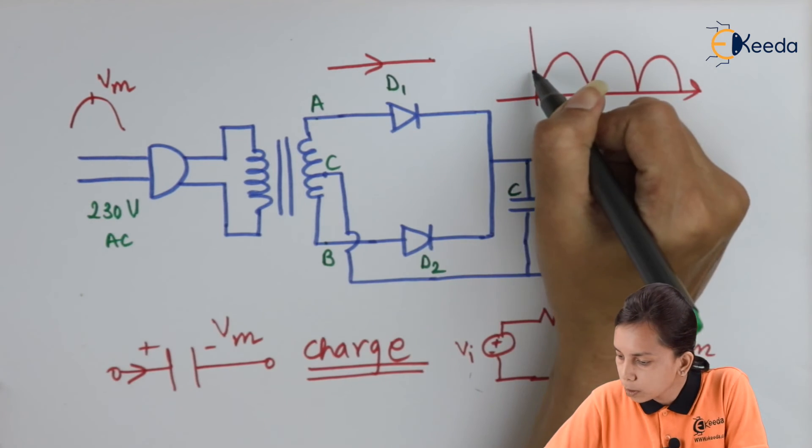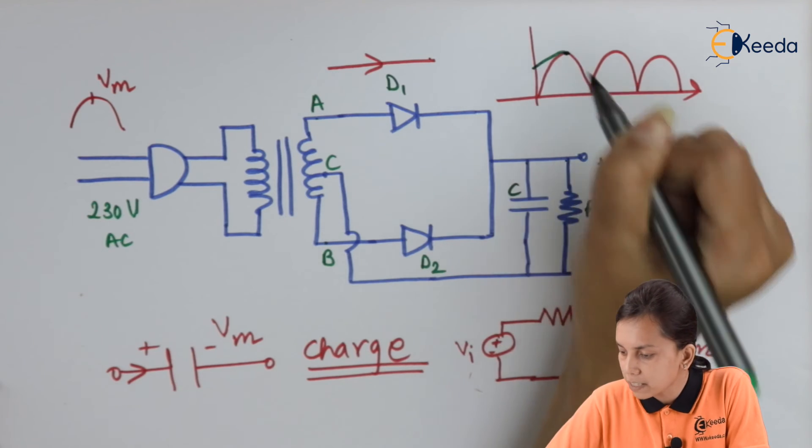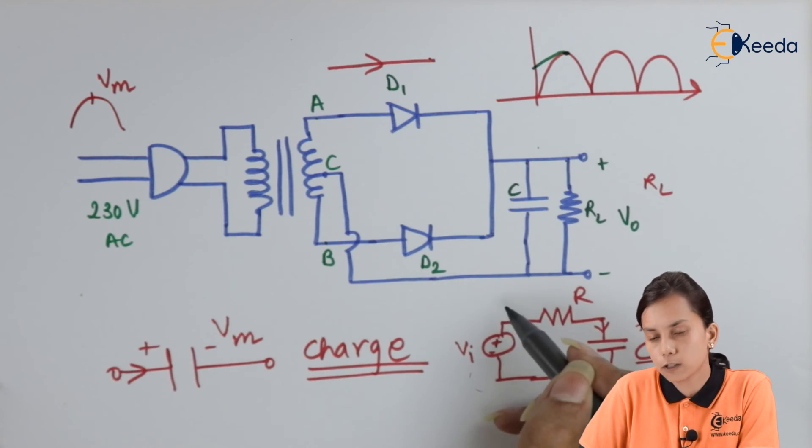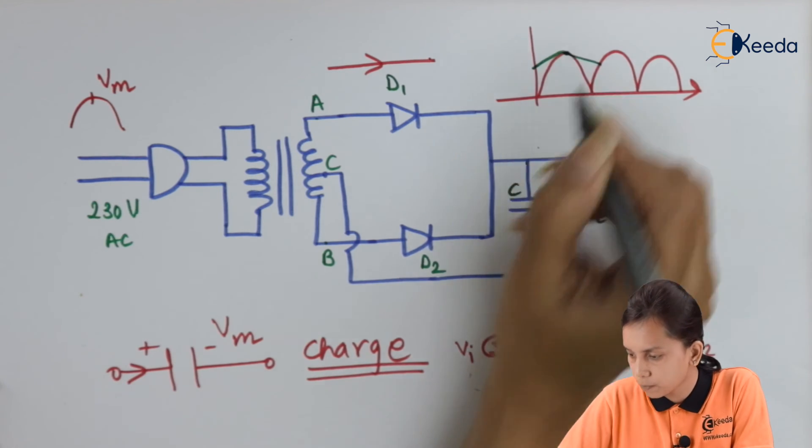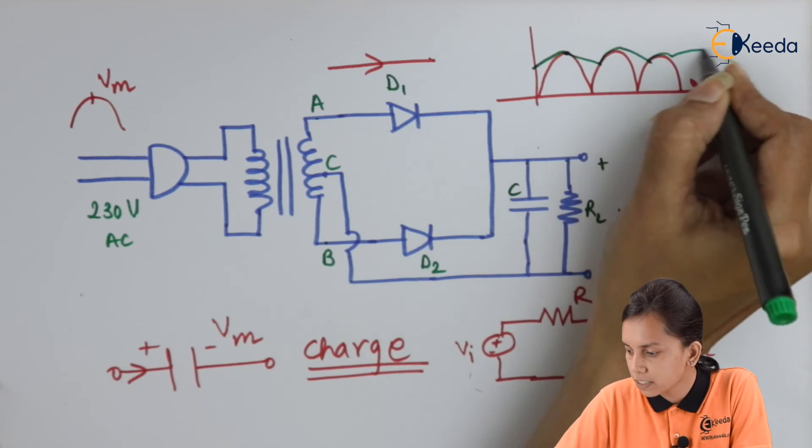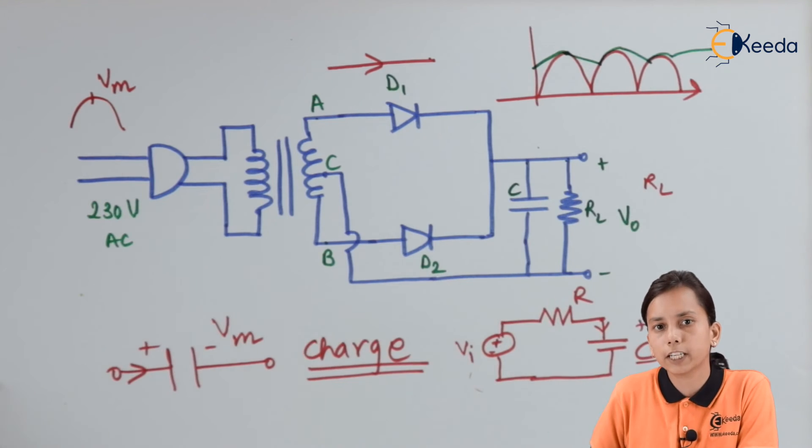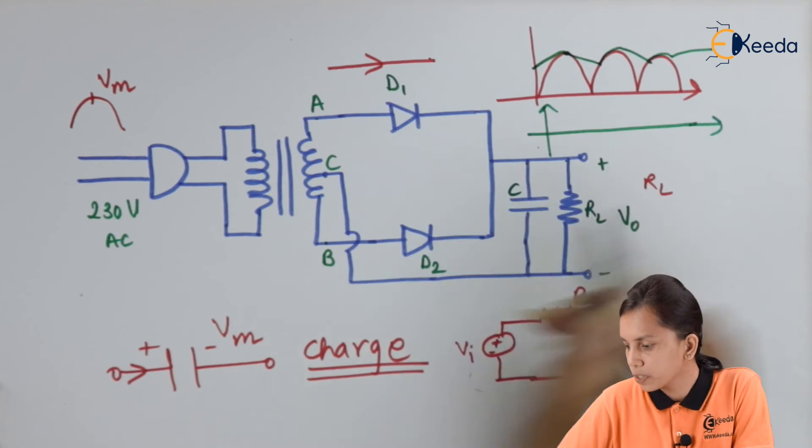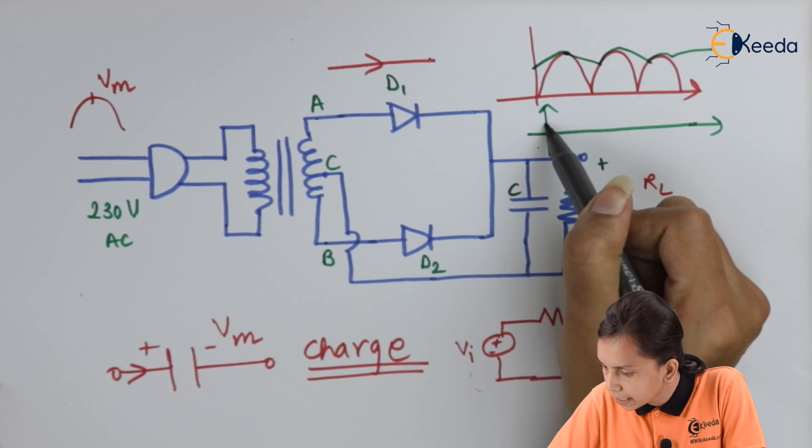This is our output of the V0. And the voltage across capacitor is also same because they are in parallel. So up to the peak value, the capacitor will be charged. When the voltage across the capacitor is low, it will start discharge. Again it will charge, then discharge. Charge and discharge. This process will continue. So what I can say that my output will be like this.